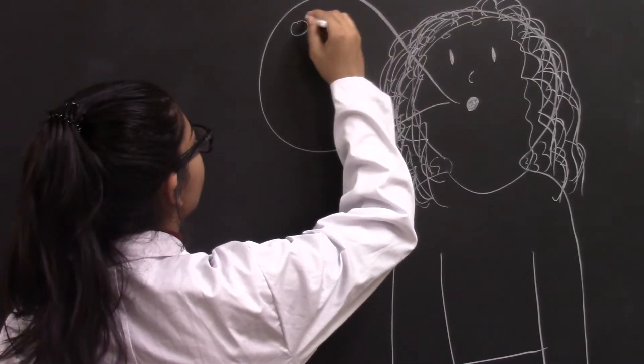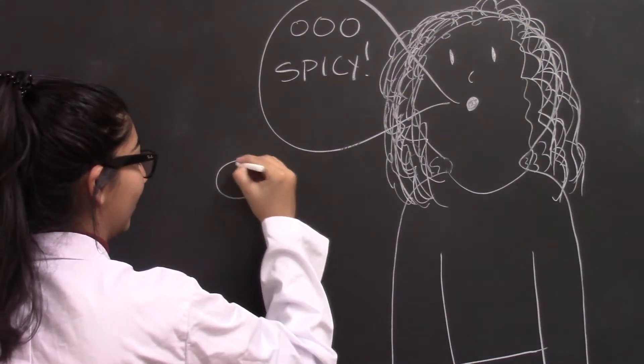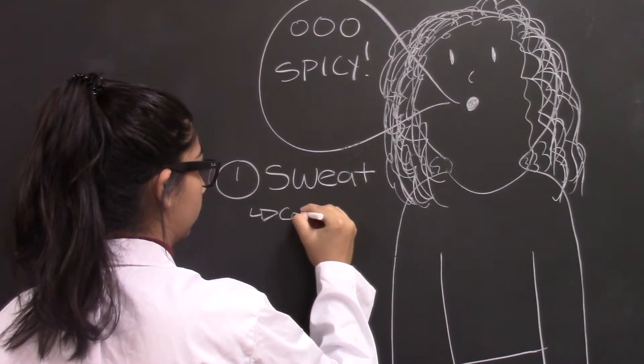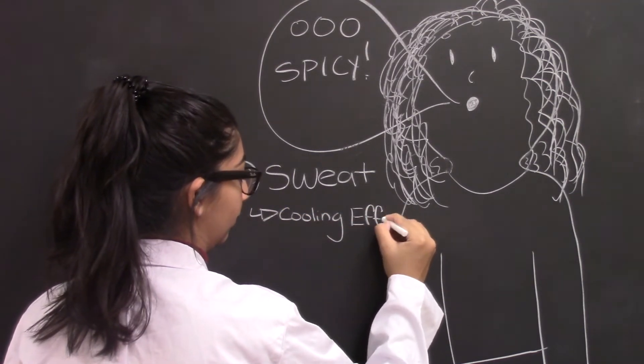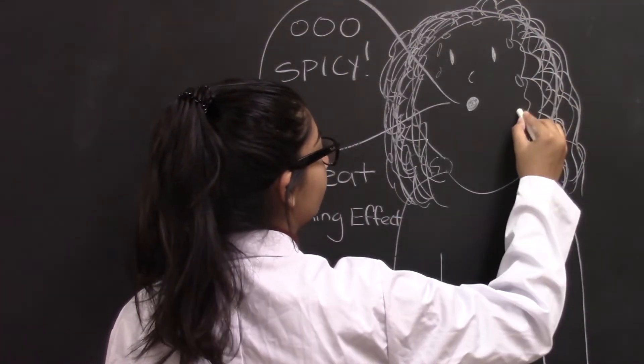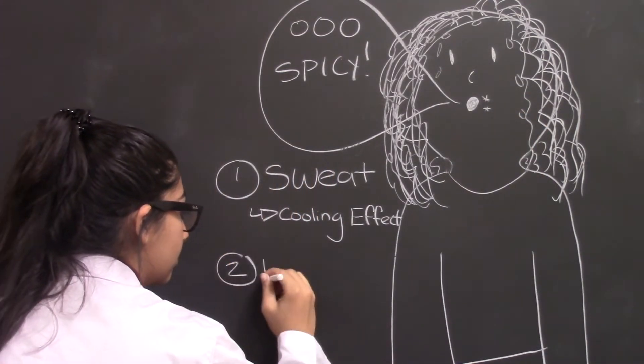Once we consume spicy foods, we can start to see the effects on our body almost immediately. First, sweat is a natural response to eating spicy food. The capsaicin in chili causes your brain to determine that your body is overheating. When this happens, sweat is produced to cool you down, which is perfectly normal. This is known as the cooling effect, and is one of the reasons that it's hypothesized that spicy food is so common in hotter climates.